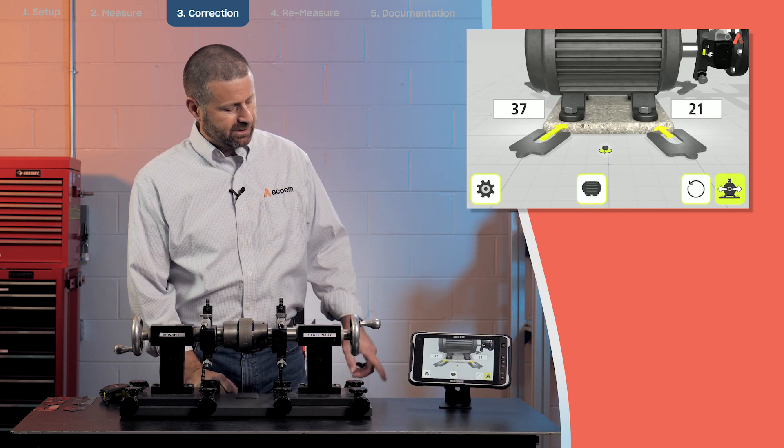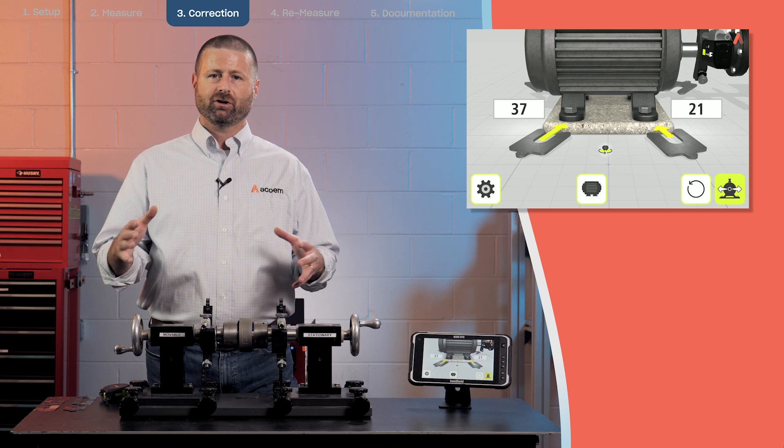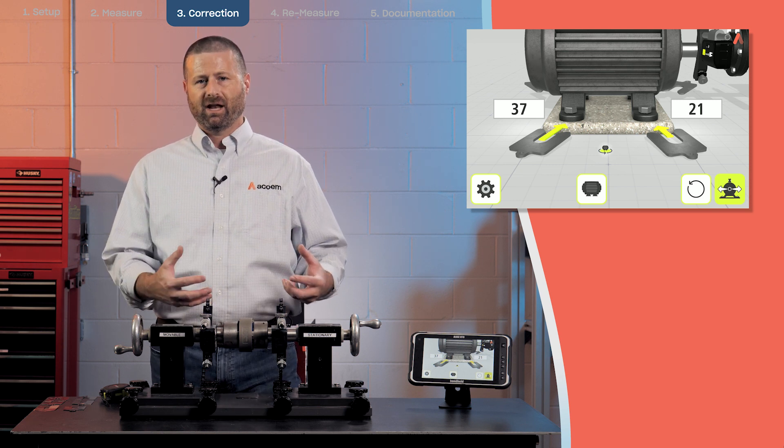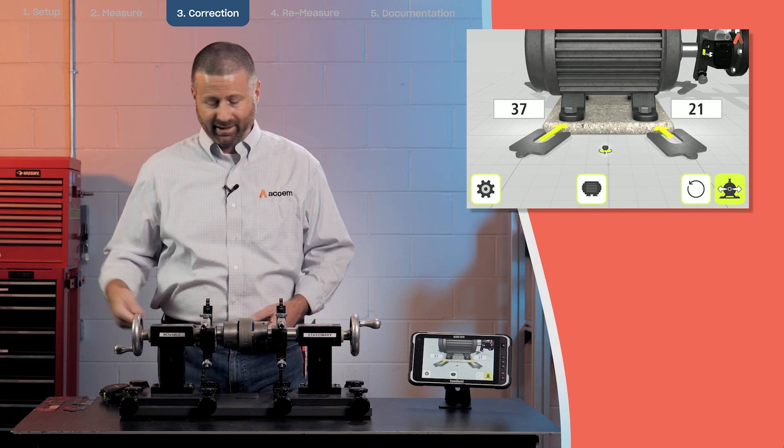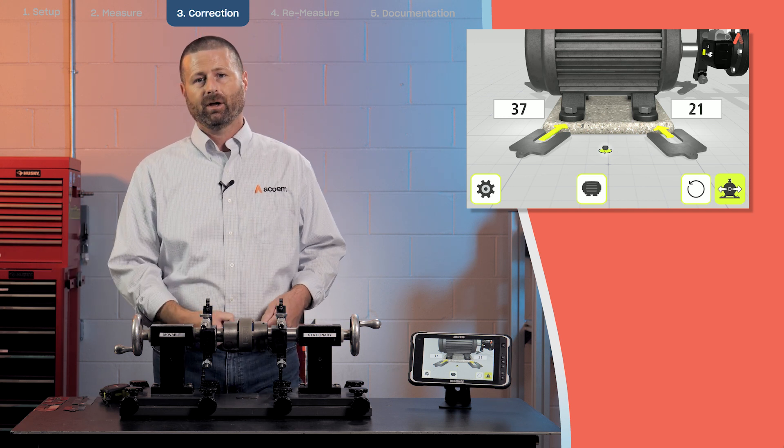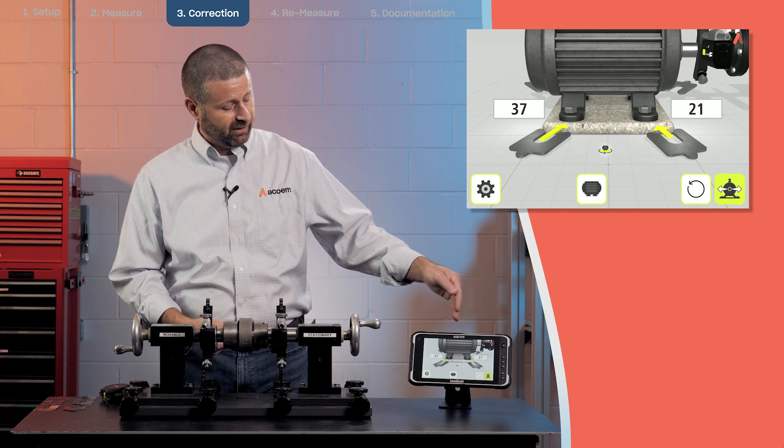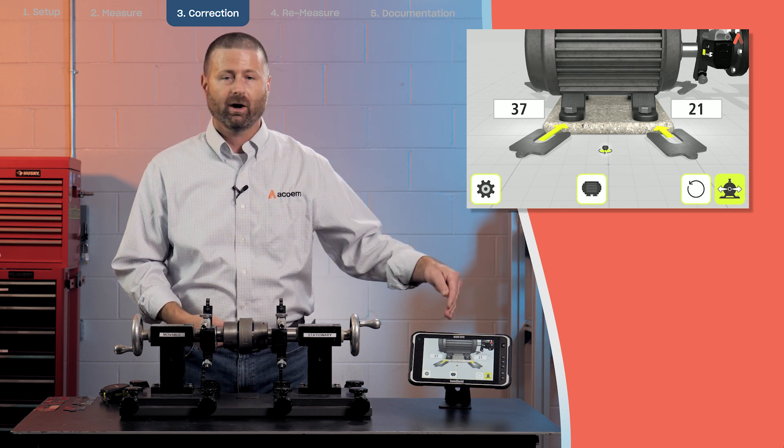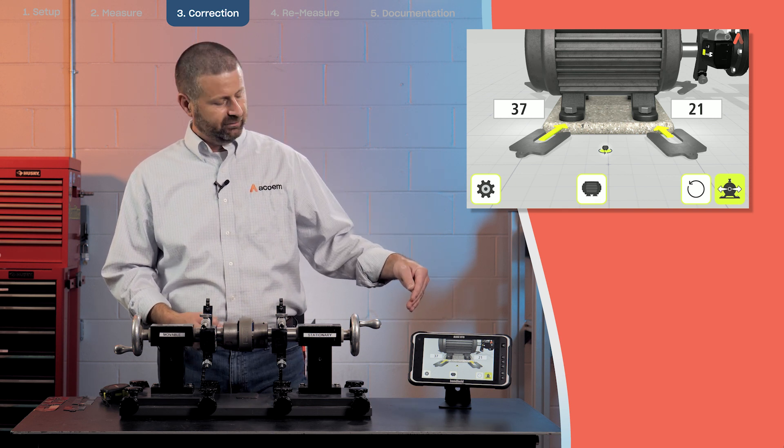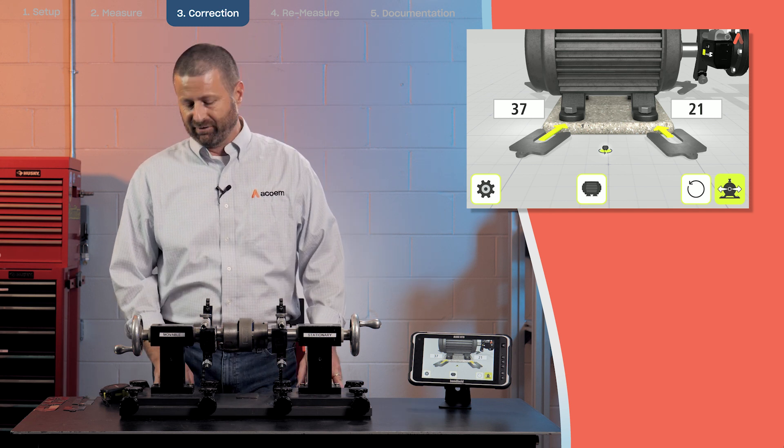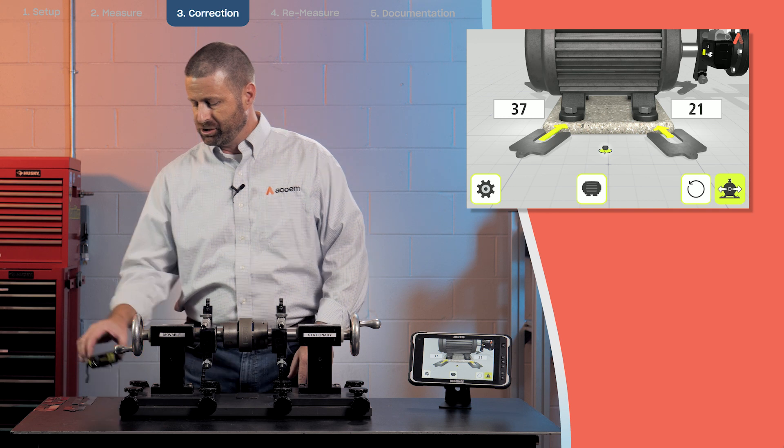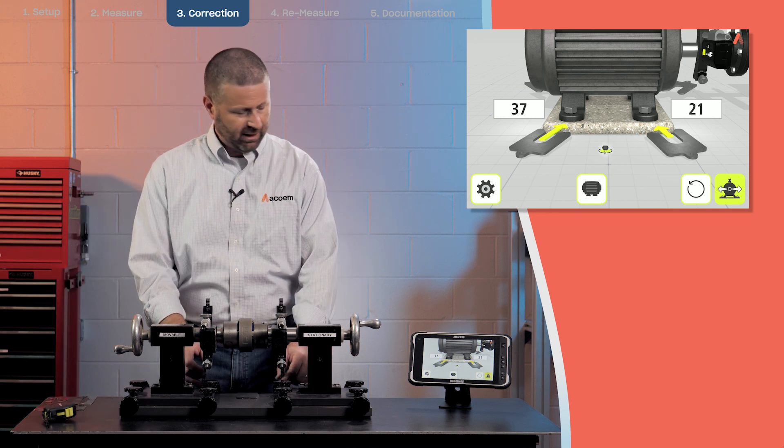Now you can see we have a picture that's drawn to represent what the positive and negative means. An arrow going in means I need to add shim underneath those feet. In this case, I've got front feet where I need to add twenty one thousandths and then rear feet where I need to add thirty seven thousandths. I've already got some shims pulled out here to make these adjustments.